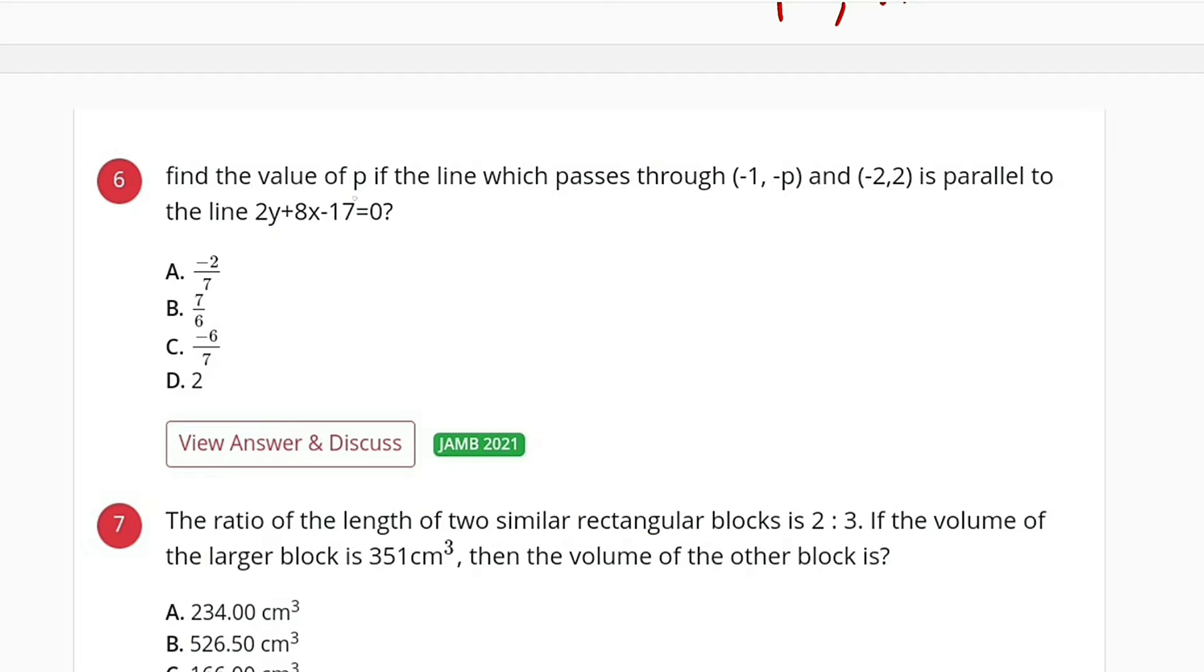Question number 6, we are asked to find the value of P. If the line which passes through these two points is parallel to the line 2y plus 8x minus 17 equal to 0.